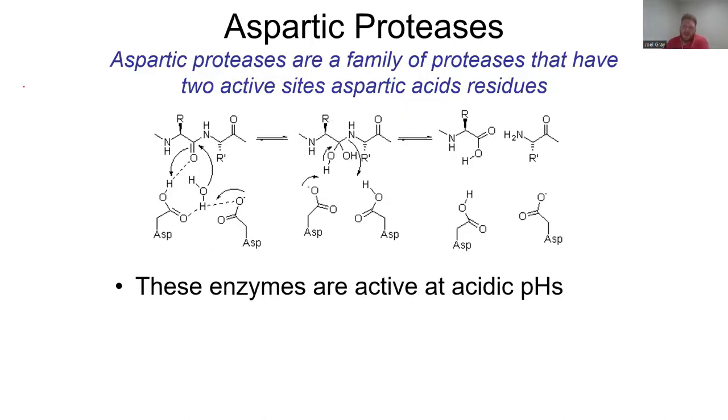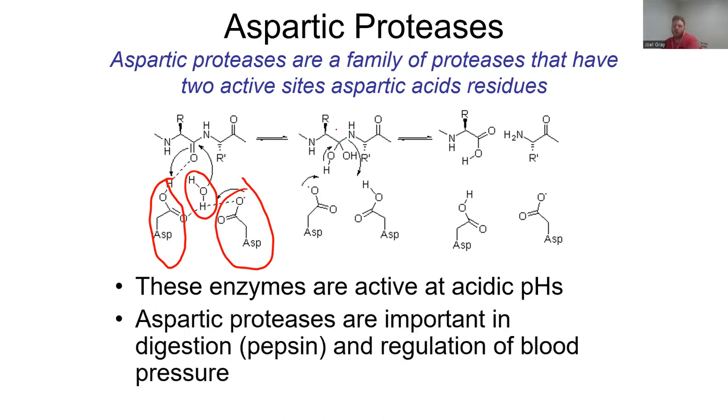Aspartic proteases are another class of enzymes that have two active site aspartic acid residues. These enzymes are active at acidic pHs, which you can reasonably say means they would be considerably less active at very basic pHs. If you look at these two amino acids, we've got a protonated aspartate and a deprotonated aspartate. We utilize water and establish hydrogen bonds between those residues and that water, as well as that substrate.